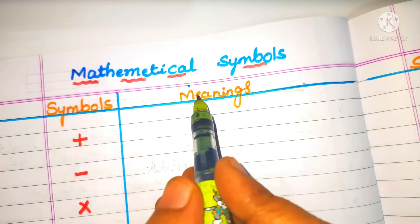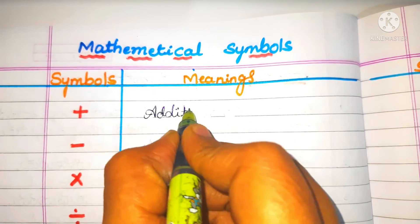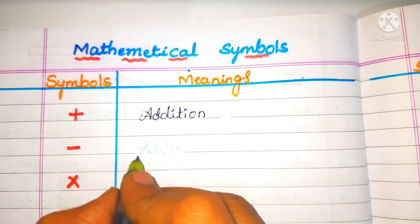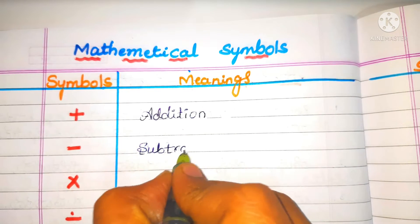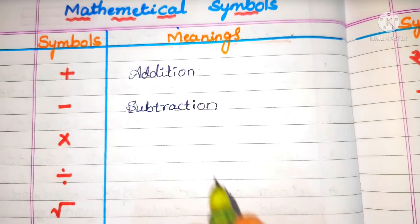Mathematical symbols. Symbol. First one: Addition. Second one: Subtraction.